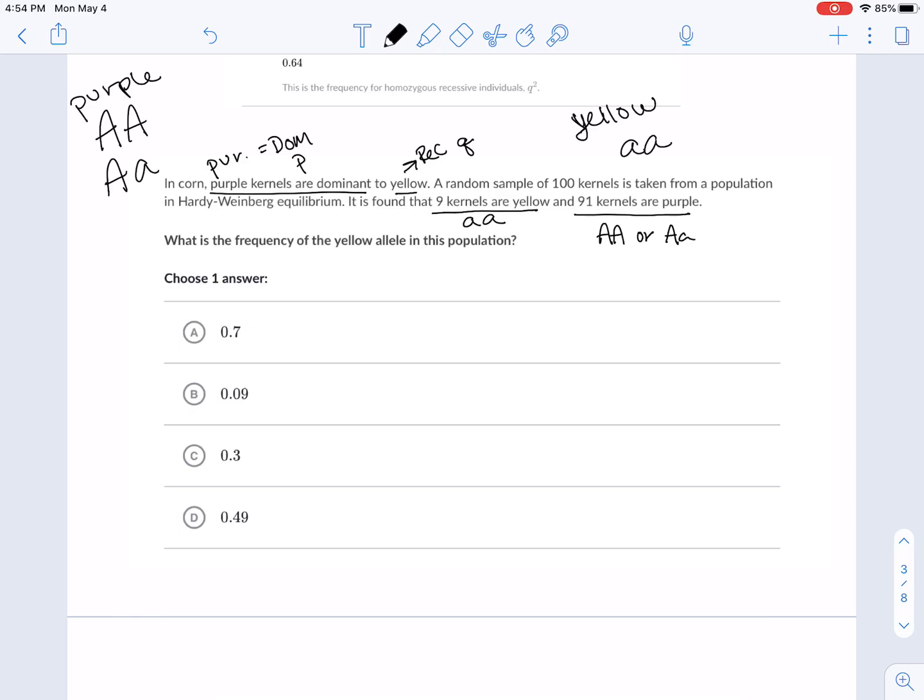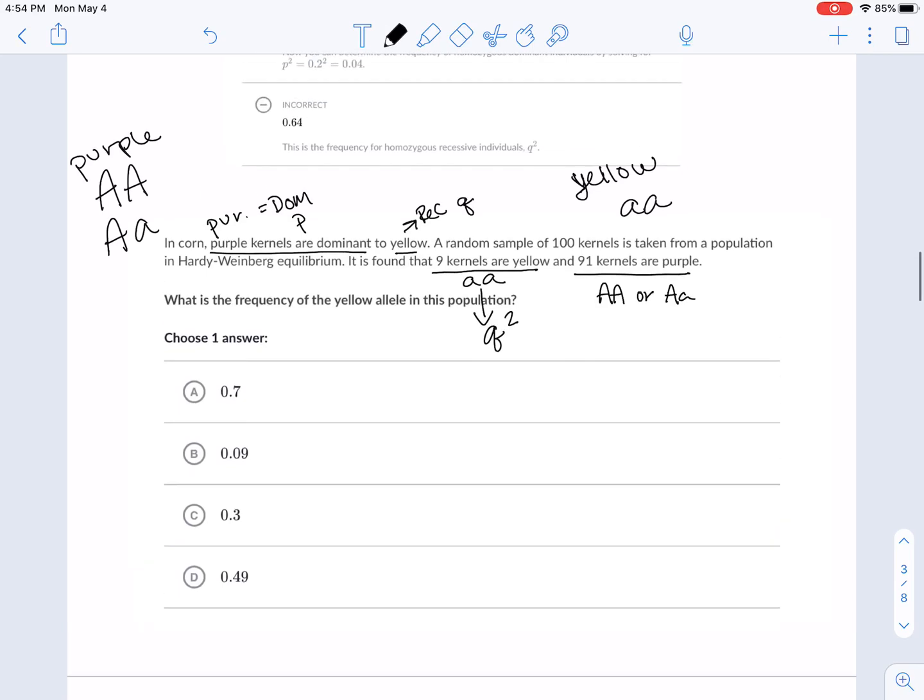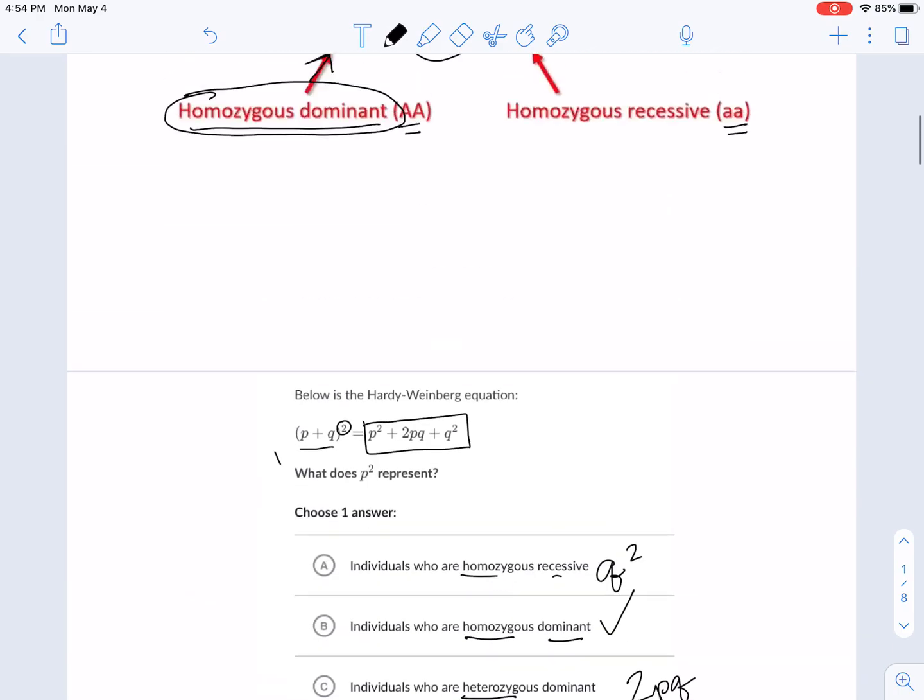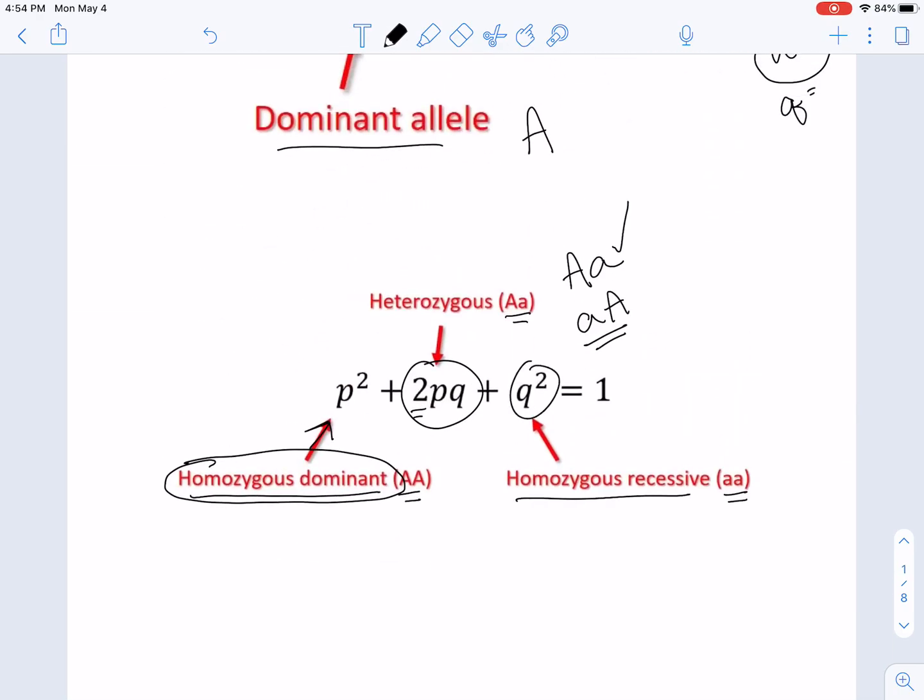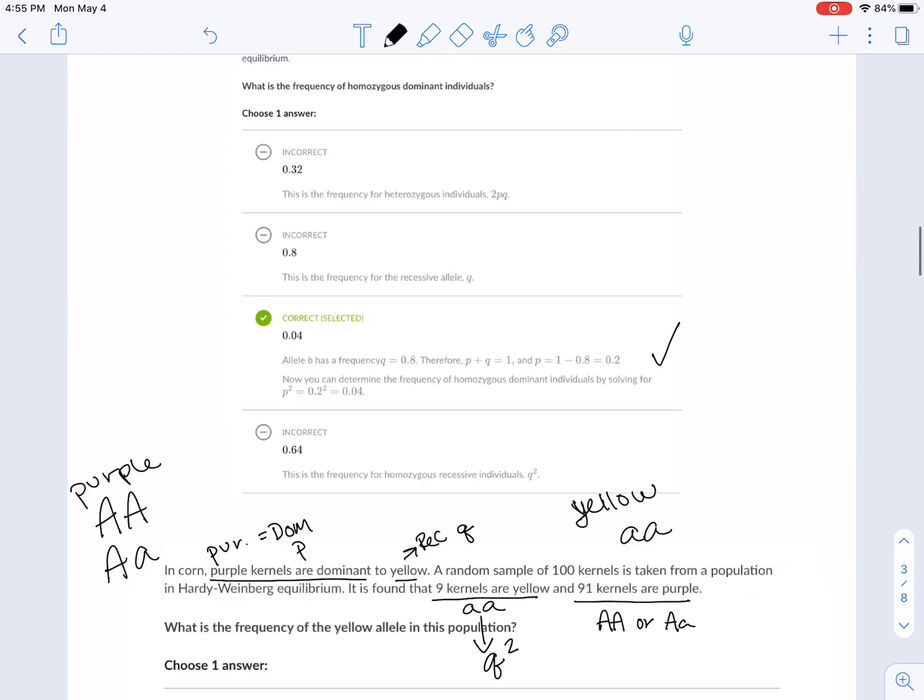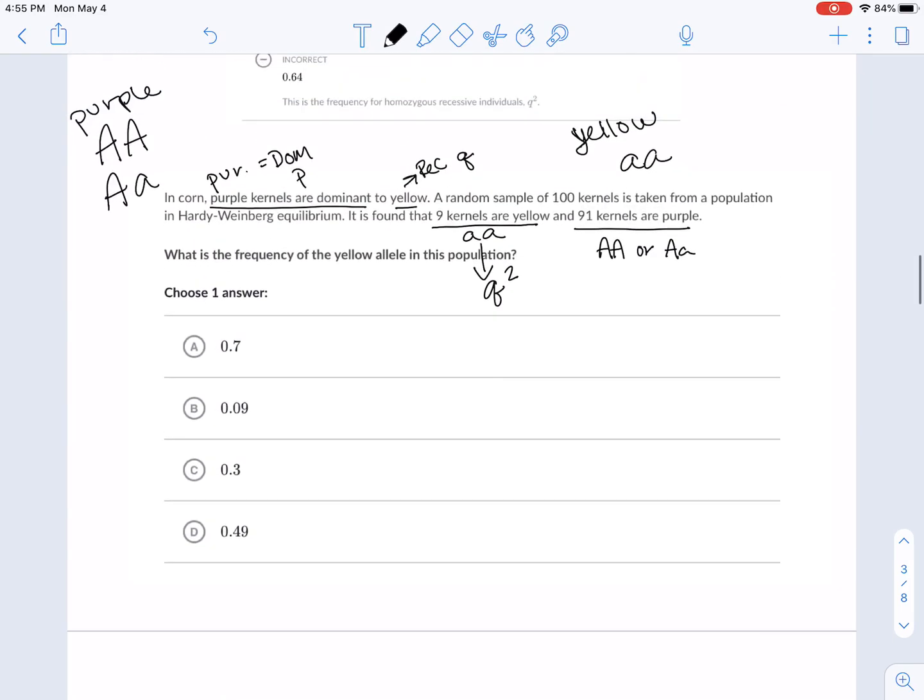So this 91 kernels are purple, which means that they could be this or they could be this. And nine kernels are yellow, which has to be this. So that's what we know. So let's think about this even further. These nine kernels that are yellow are little a, little a, double recessive, homozygous recessive. What represents homozygous recessive in Hardy Weinberg? Hopefully you just said Q squared.